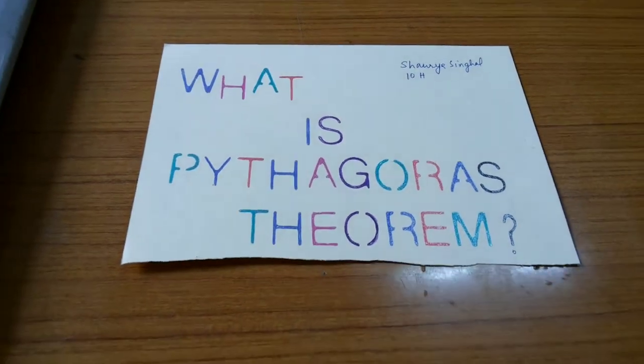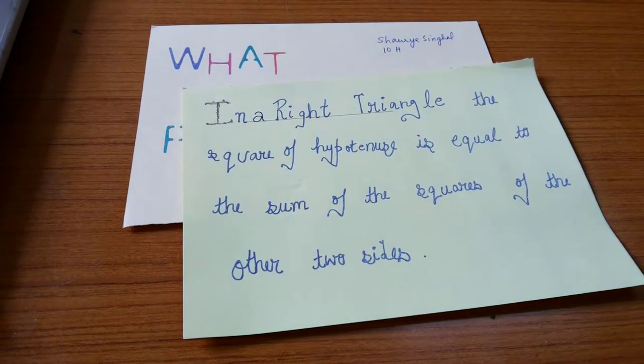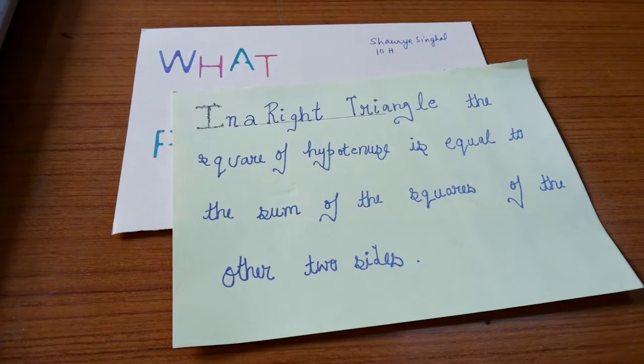Shauray, what is Pythagoras theorem? Pythagoras theorem states that in a right triangle, the square of hypotenuse is equal to the sum of the squares of the other two sides.